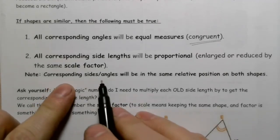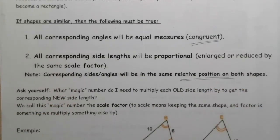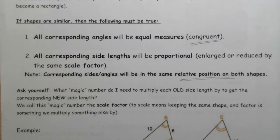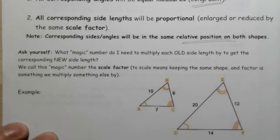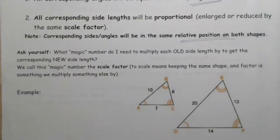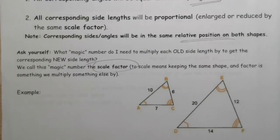Corresponding sides and angles will be in the same relative position in both shapes, because the shape hasn't changed. A little hint: ask yourself what magic number do I need to multiply each old side length by to get the new side length — that magic number is the scale factor.